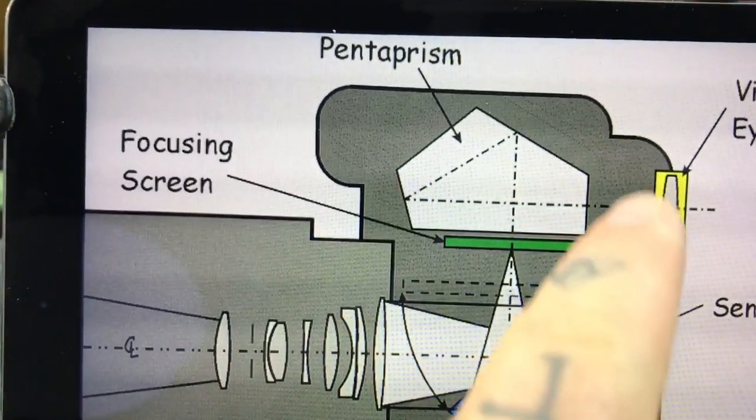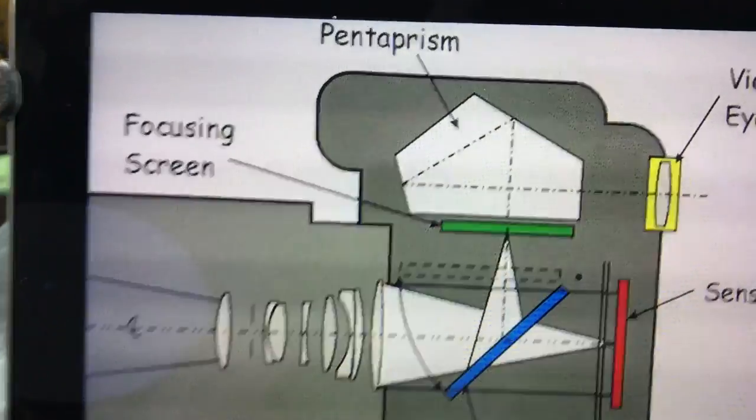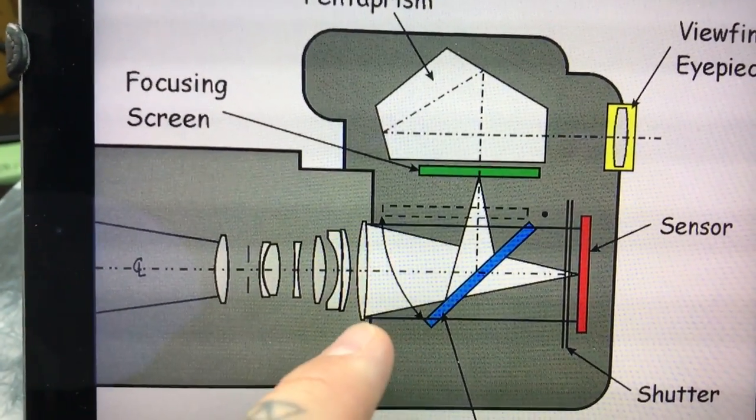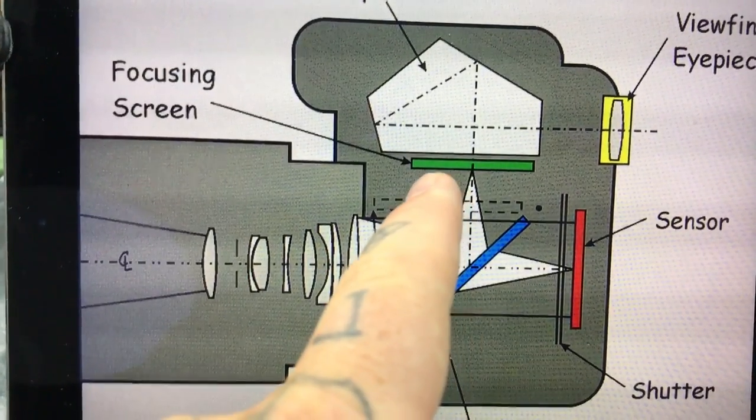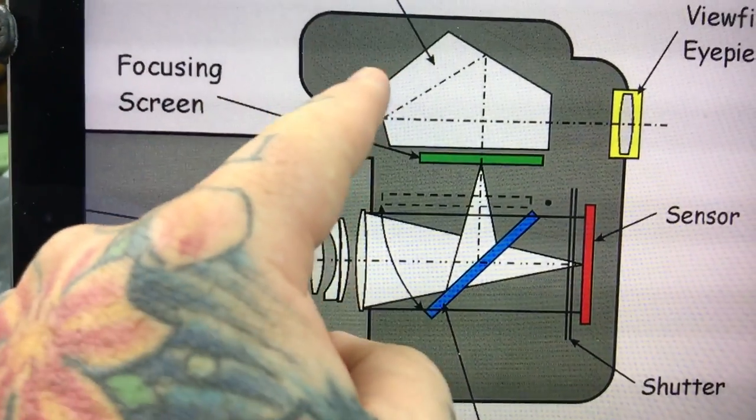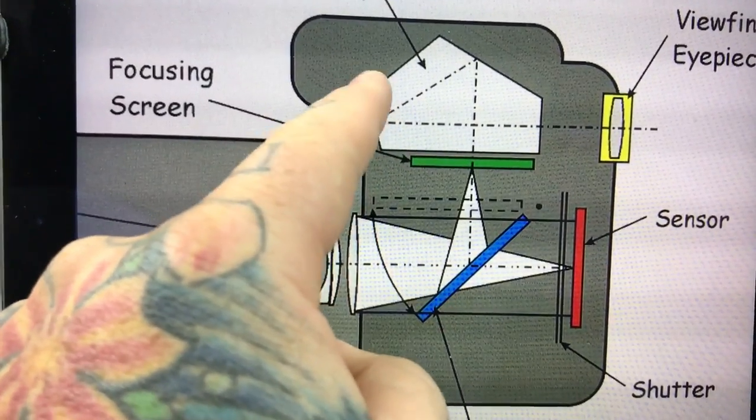So what's happening is, as the light's passing up through here, just use it like a regular Nikon DSLR, but if you're going to do video or focus peaking, the mirror flips up out of the way, the light hits the sensor, and what that does is it feeds this section, which is the electronic viewfinder.